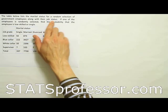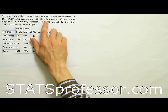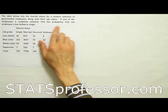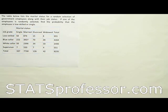The table below lists the marital status for a random selection of government employees, along with their job status. If one of the employees is randomly selected, find the probability that the employee is low-skilled or single.